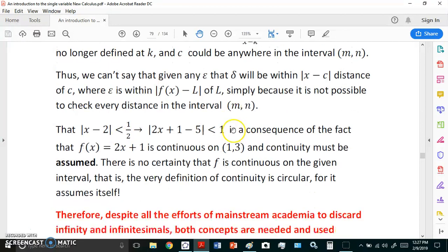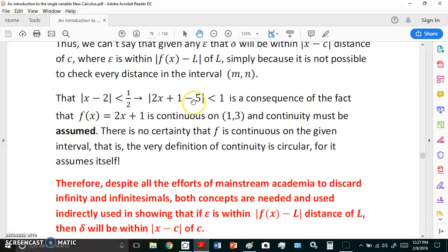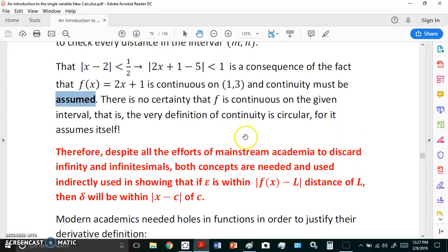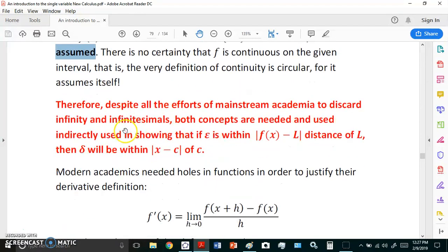Then it is true that f(x) is no longer defined at k and c could be anywhere in the interval. Thus we can't say that given any epsilon that delta will be within |x - c| distance of c simply because it's not possible to check every distance in the interval (m,n). So that this is true is a consequence of the fact that the function f is continuous on (1,3) and continuity must be assumed. There's no way you can prove it. There is no certainty that f is continuous because you can punch a hole anywhere in that interval by multiplying by 1 and picking any k you like in the interval. And therefore despite all the efforts of mainstream academia to discard infinity and infinitesimals, both concepts are needed and used indirectly in showing that epsilon is within |f(x) - L| distance of L, that if it is then delta will be within |x - c| distance of c.